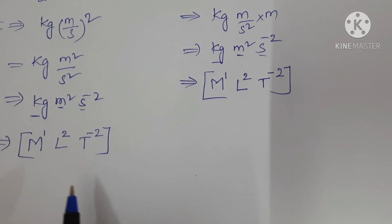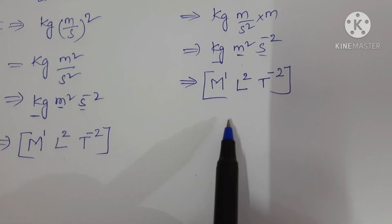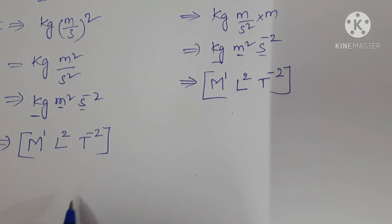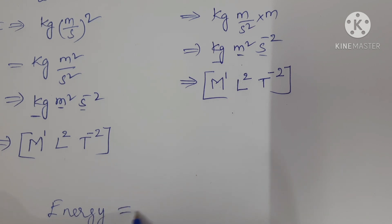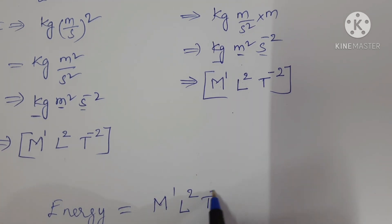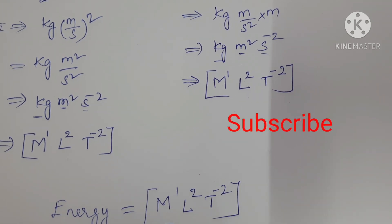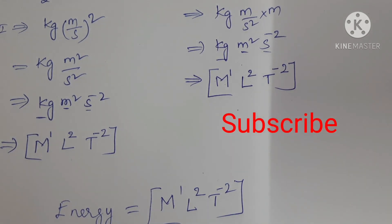Both kinetic energy and potential energy have the same dimensions. Hence we can write the dimensional formula for energy as M power 1, L power 2, T to the power of minus 2. This is the dimensional formula for energy.